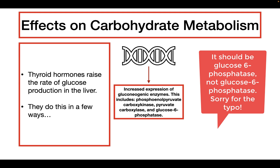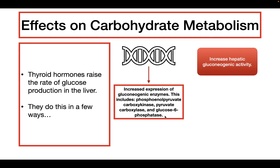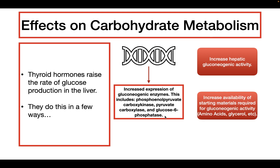The first is phosphoenolpyruvate carboxykinase. The second is pyruvate carboxylase. And the third is glucose-6-phosphatase. All three of these enzymes are used in gluconeogenesis. Therefore, by increasing the expression of these enzymes, we're also increasing gluconeogenesis in the liver. In addition, thyroid hormone is also going to increase the availability of starting materials required for gluconeogenesis, including increasing the amount of amino acids in the blood, increasing the amount of glycerol, and more — and we're going to talk about how thyroid hormone does these things in a little bit.